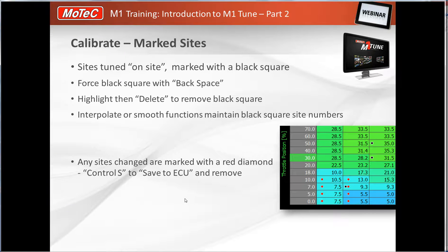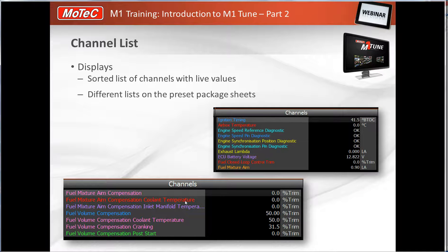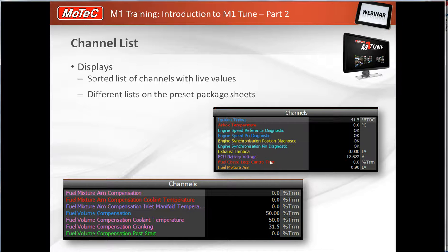The channel list shows items relevant to the current sheet. You can see statuses indicating whether things are okay or not, error messages when they occur, and numeric representations of voltages, percentages, and other ECU values.